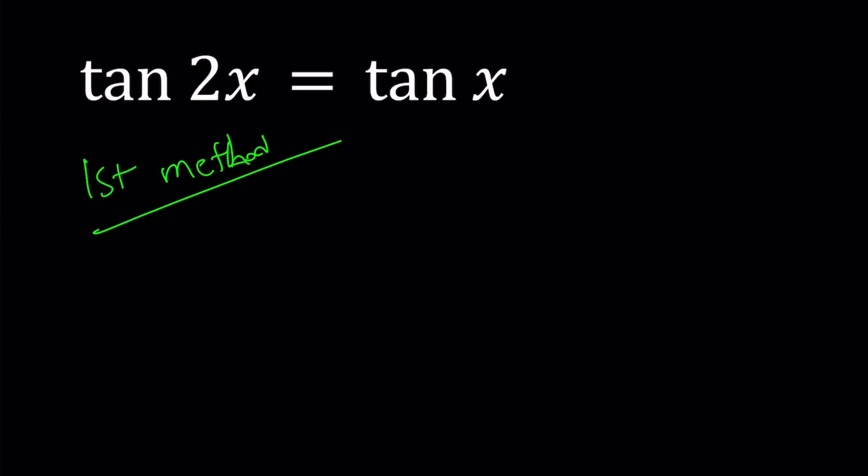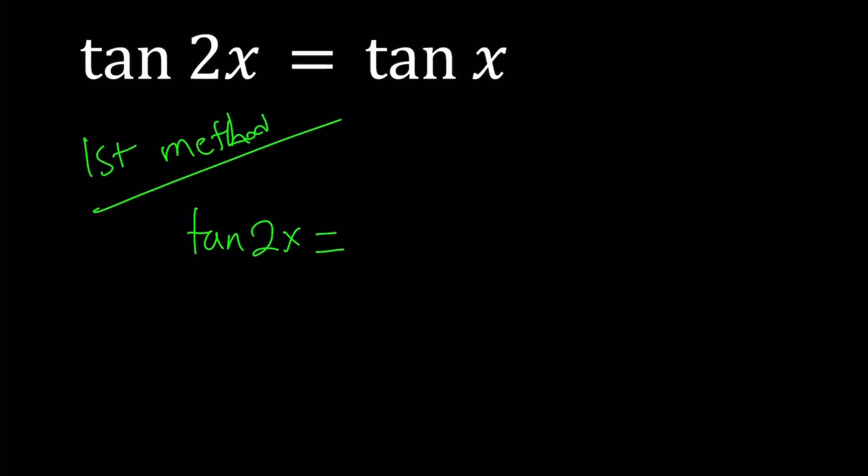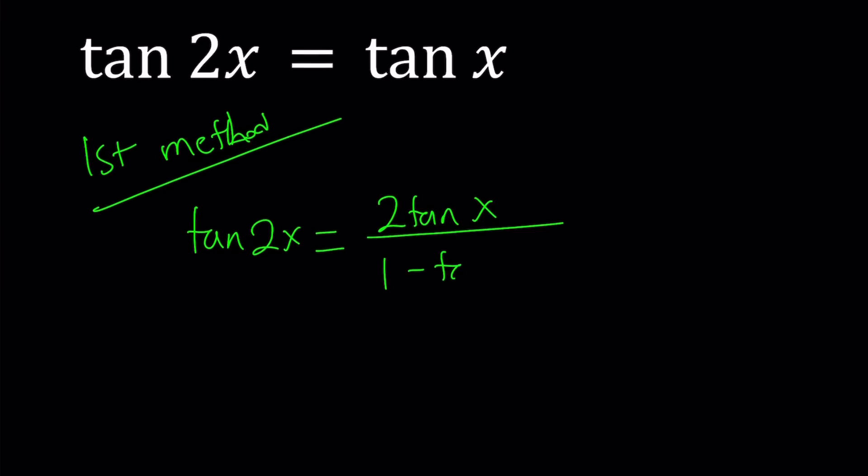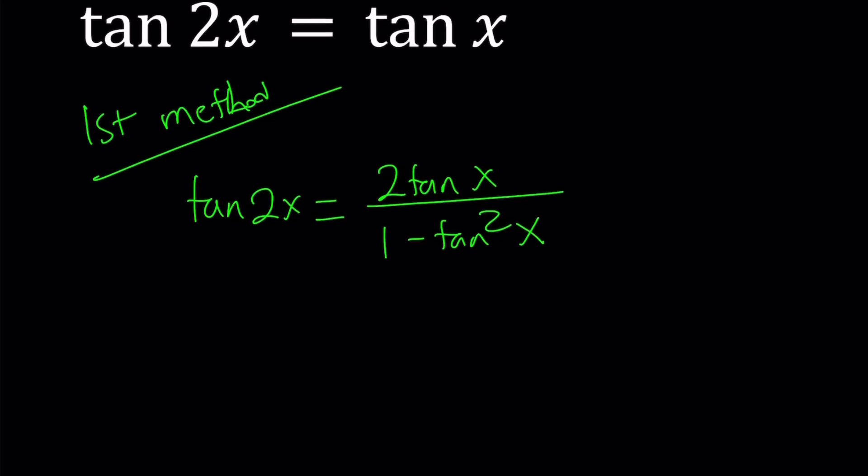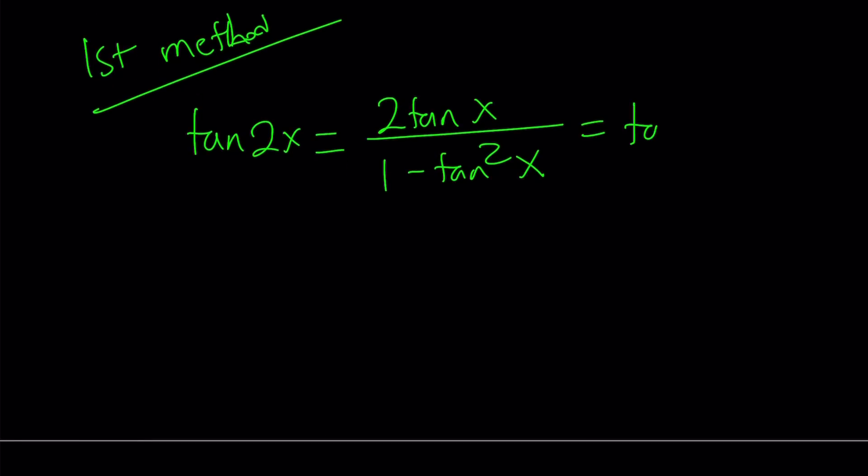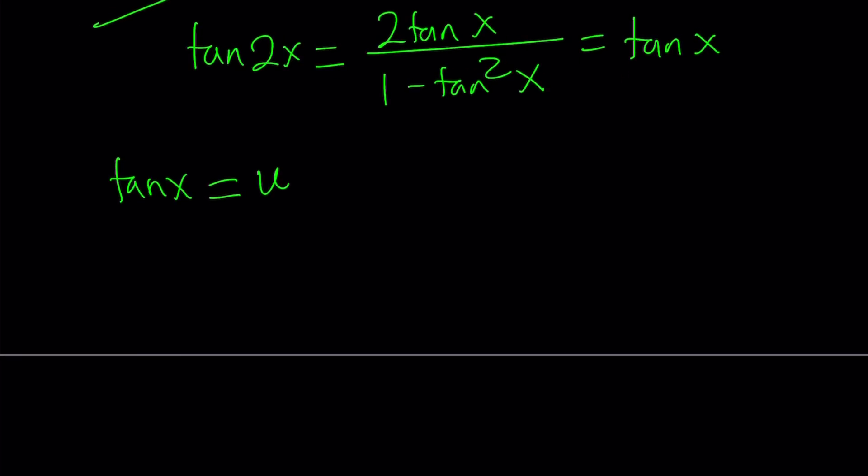For my first method I'm going to be using a formula for tangent 2x, which you should know if you're studying trigonometry. And if you haven't studied trigonometry, you should start now. Why not? 2 tangent x divided by 1 minus tangent squared x. By using that formula, I can set up an equation. Let's use substitution. Substitution is one of my favorite methods. Let's set tangent x equal to u. From here we get the following.